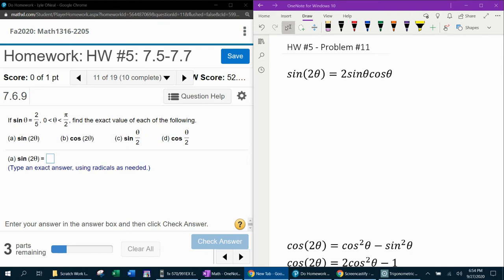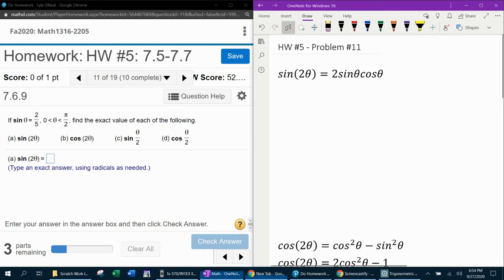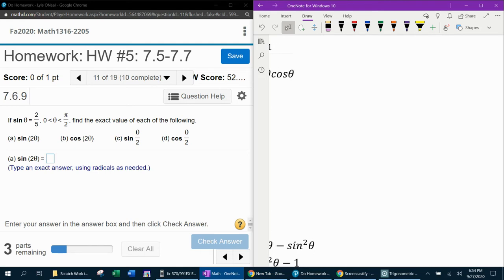They want us to find sine of 2 theta, cosine of 2 theta, sine of theta over 2, and cosine of theta over 2. And what they've given us is that sine theta is 2 fifths, so we're going to make a note of that. Sine theta is 2 fifths, and they also tell us that theta is in quadrant 1.